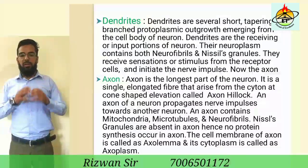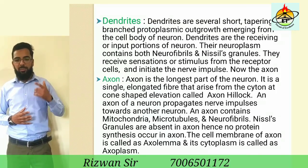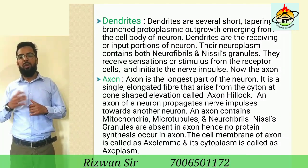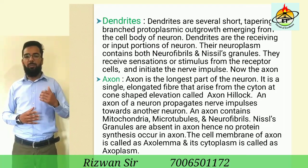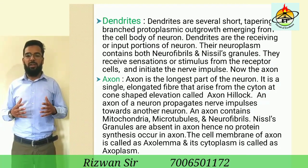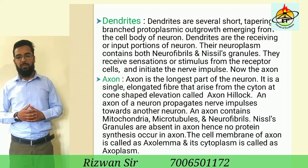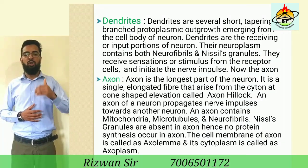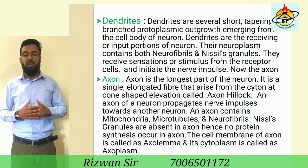Dendrites are several short, tapering, branched protoplasmic outgrowths emerging from the cell body of the neuron. Dendrites are the receiving or input portions of neurons. Their neuroplasm contains both neurofibrils and Nissl granules. They receive sensations or stimuli from the receptor cells and initiate the nerve impulse.